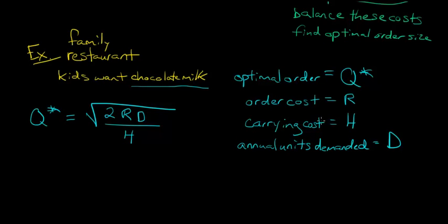So when we've got the carrying cost, we're actually talking about here, this H is the carrying cost of one unit for one year. So hypothetically, if we were going to keep one thing of chocolate milk for an entire year, that's the carrying cost is H. R is the cost of the order. And then D is the annual units demanded.